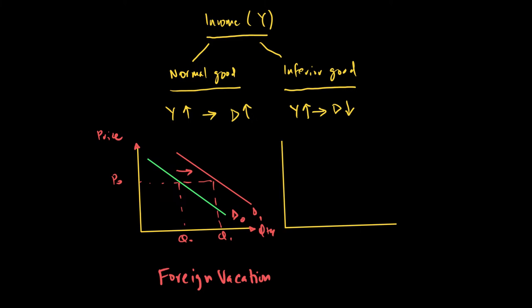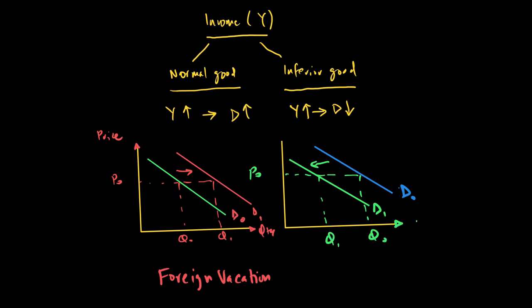On the other hand, for an inferior good, when income goes up, the demand curve shifts backward. When people find their income rises, they may decide to take fewer bus journeys and more car journeys. So the demand curve shifts backward. This is a change in demand — not a change in quantity demanded — because irrespective of whatever the price is, the demand curve is shifting backward. Bus journeys are an example of an inferior good where when income goes up, demand actually falls.